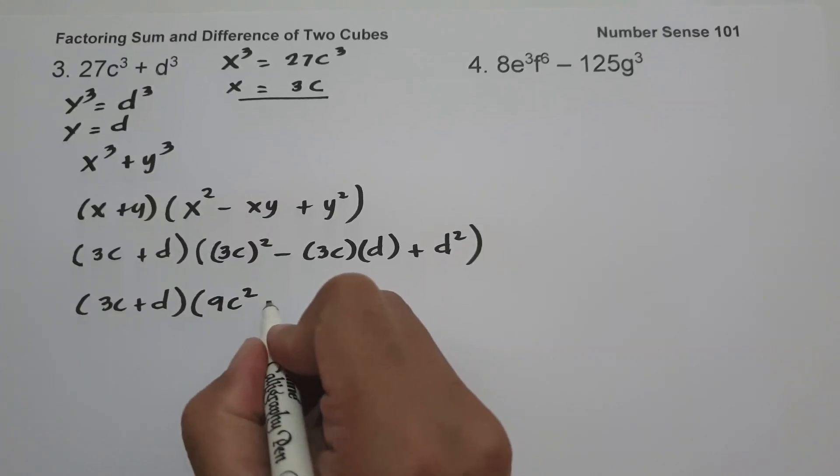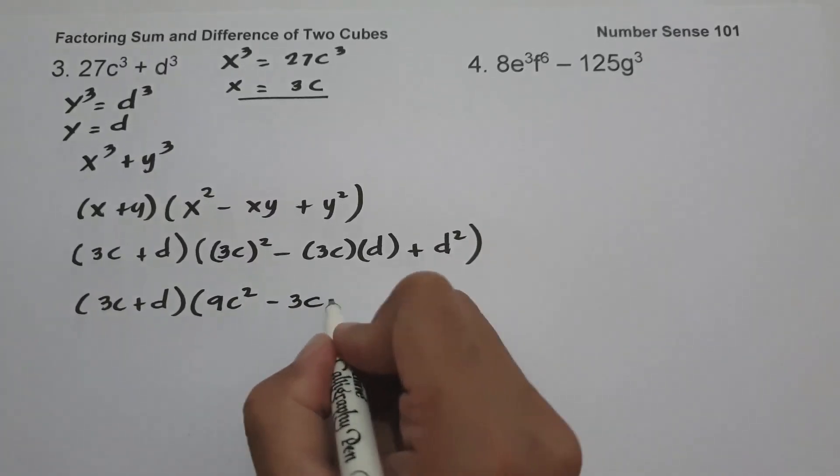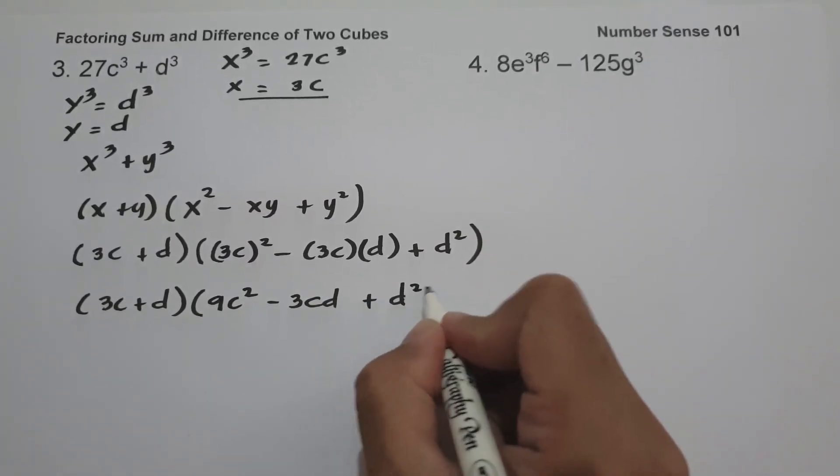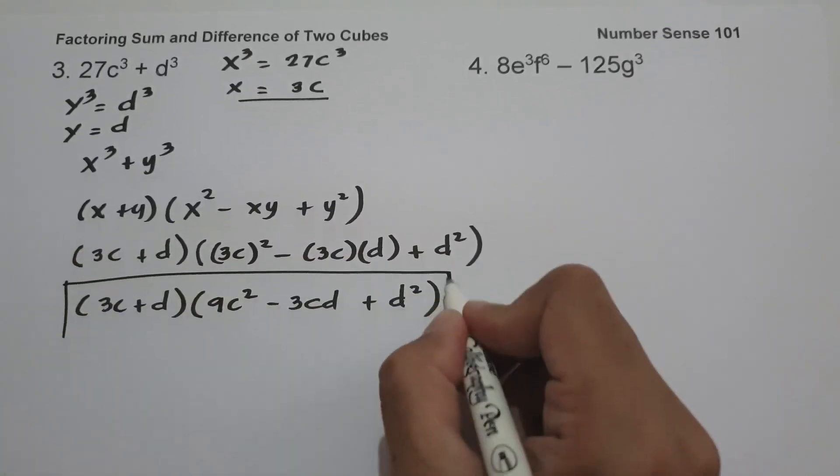Simplifying, we have (3c + d)(9c² − 3cd + d²), and this is our answer.